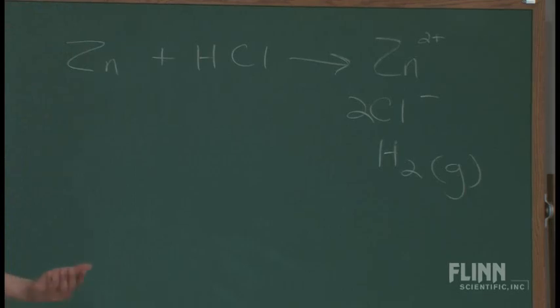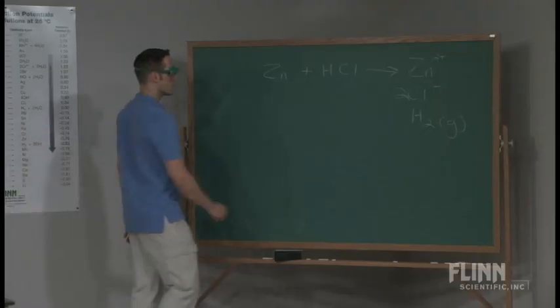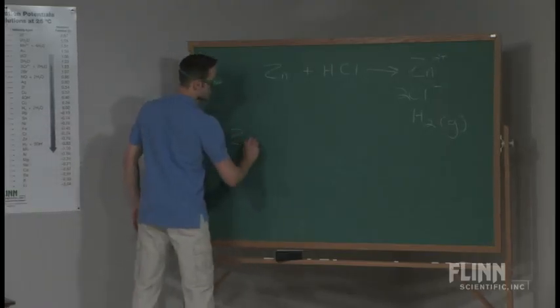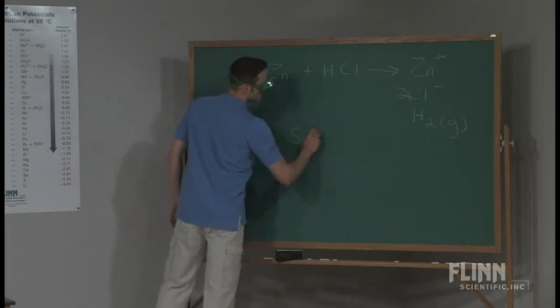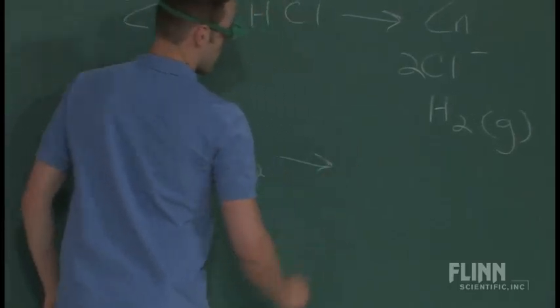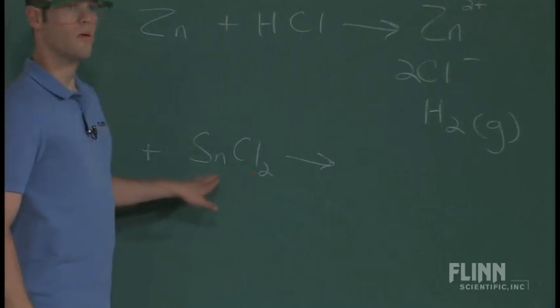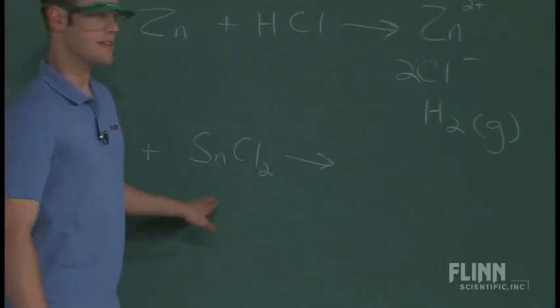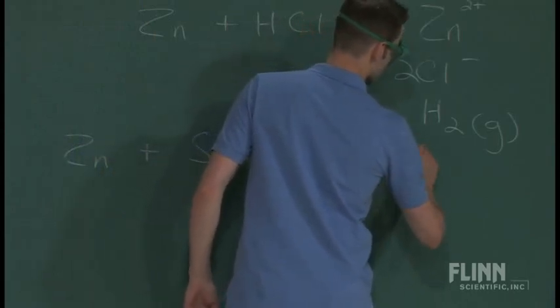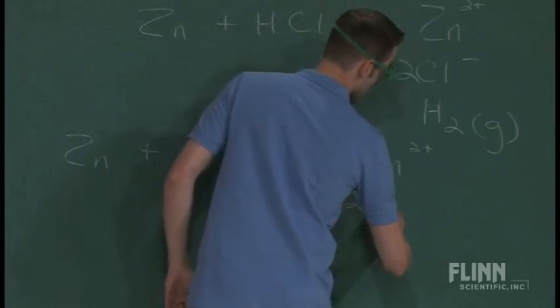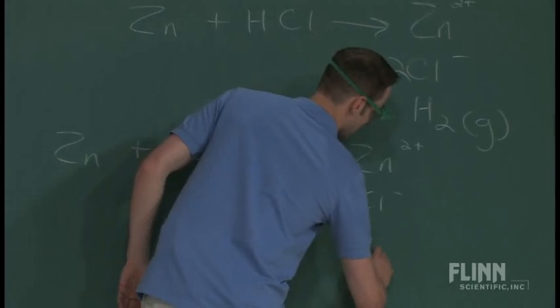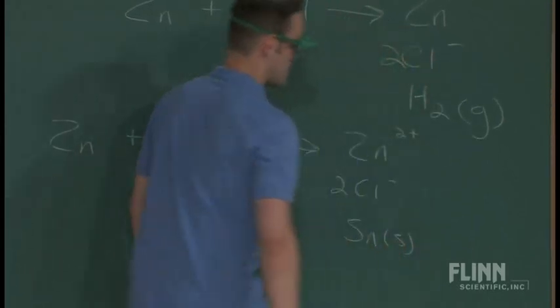The other reaction, the one that's producing those really sparkly tin crystals, is the reaction of zinc metal with tin chloride. In that reaction, again we're going to get zinc ions, chloride ions, but we're going to get elemental tin, tin in the solid state, not bonded to anything else. So you have zinc 2+ ions, you have some chloride ions, and you have tin as a solid.